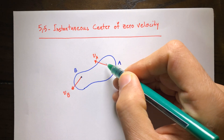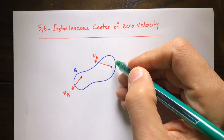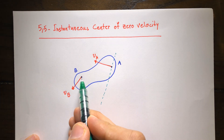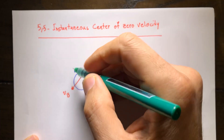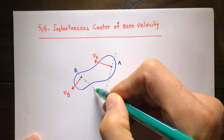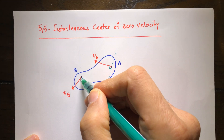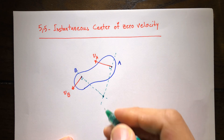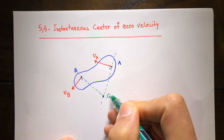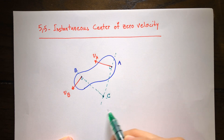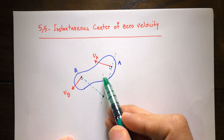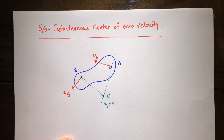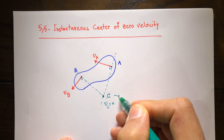You need to draw two perpendicular lines to these two velocities at points A and B. The velocity of A is in one direction, so if you draw a perpendicular line to it you get one line; do the same for point B and draw a perpendicular line to the velocity of B. These two lines cross at one point — point C — which belongs to the rigid body. The velocity of point C is equal to zero, and we call this point the instantaneous center of zero velocity.